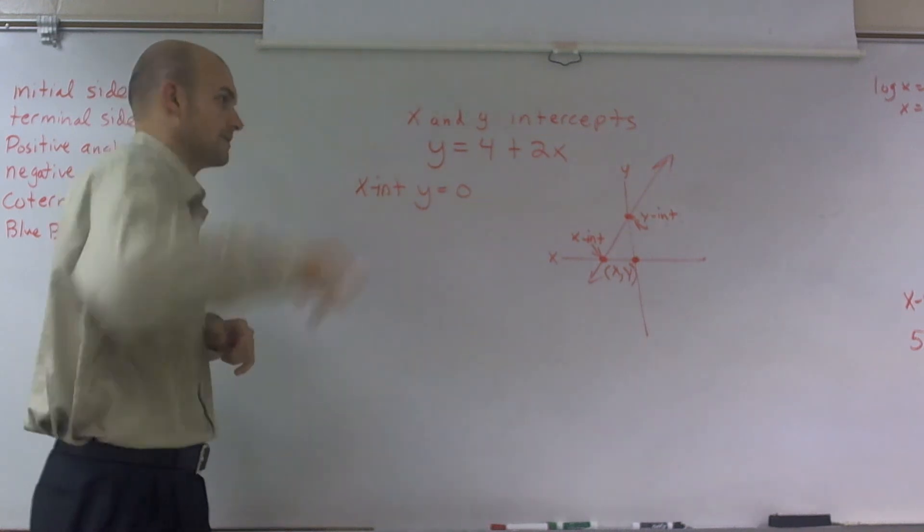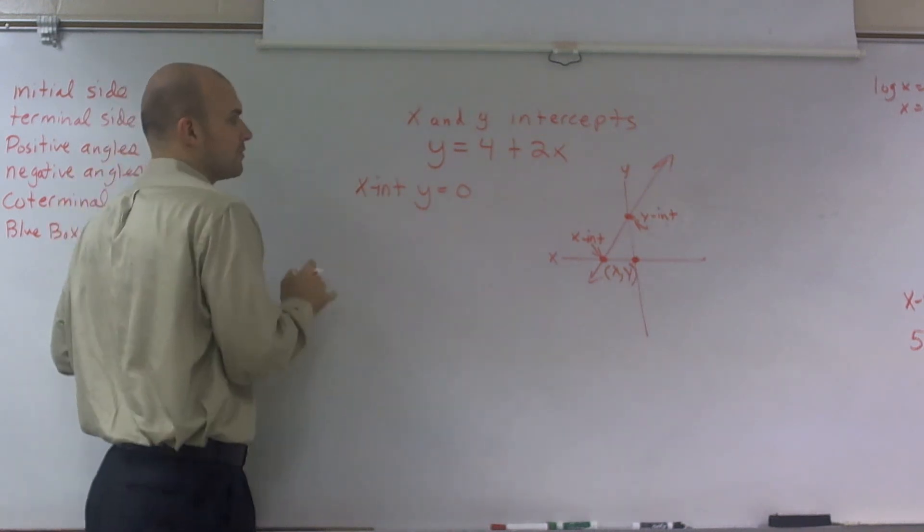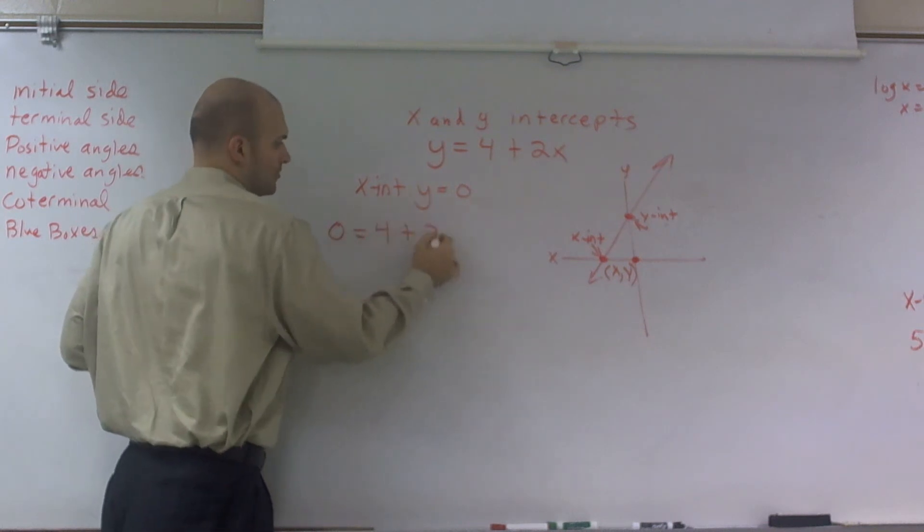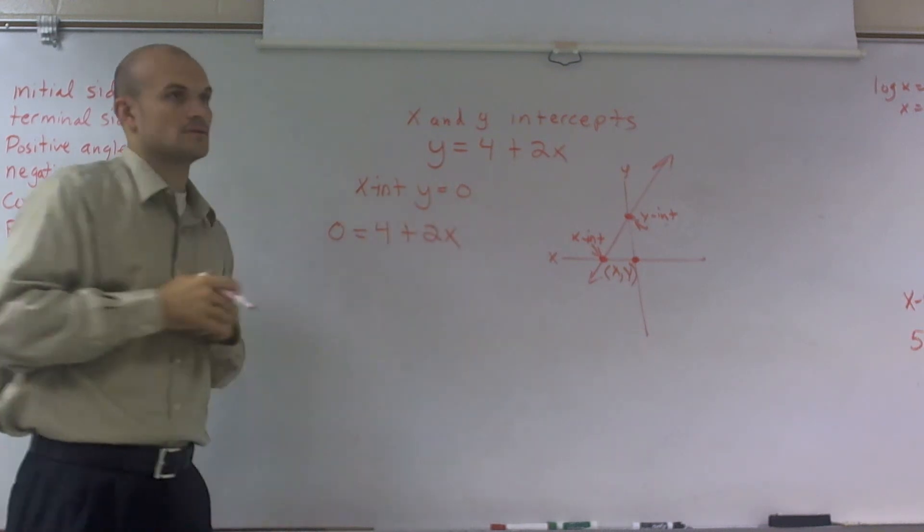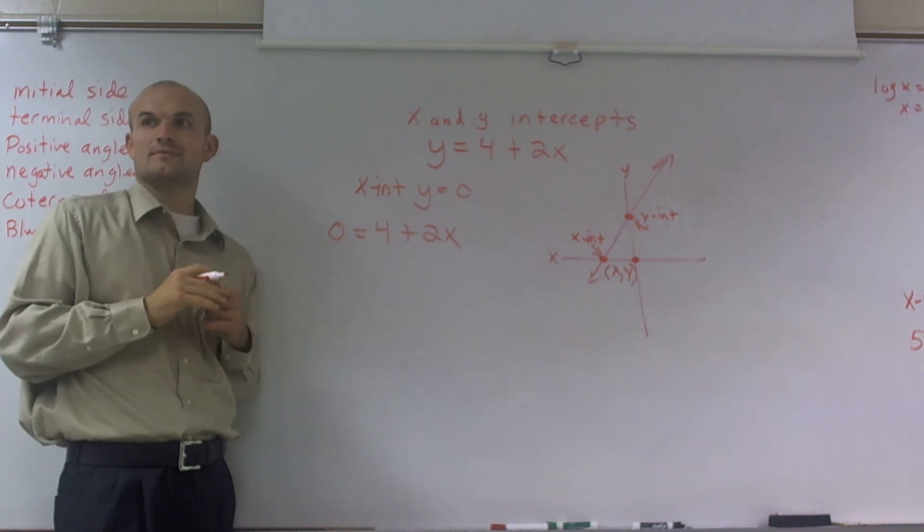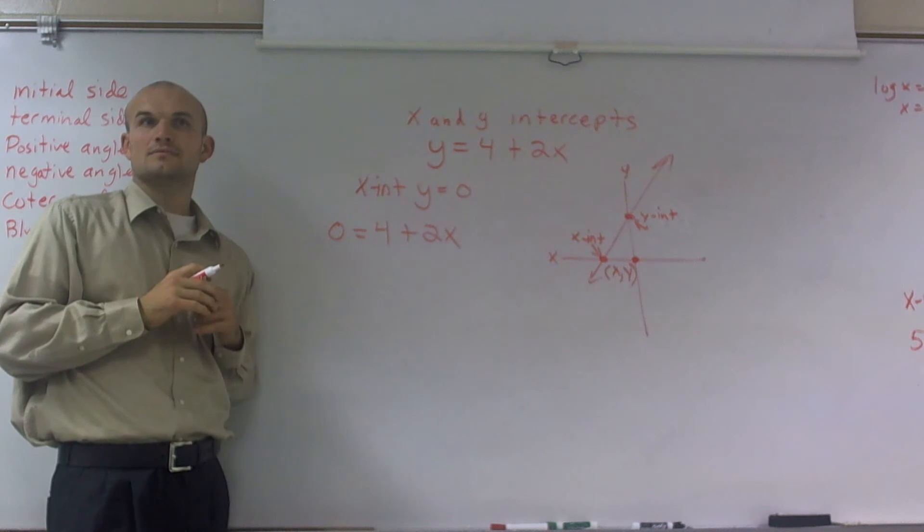So therefore, what we could say is 0 equals 4 plus 2x. That kind of makes some sense, maybe a little bit. I'm at that point right there. So now we need to solve.